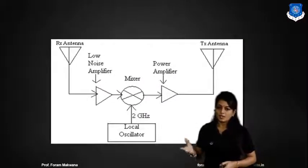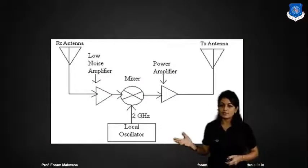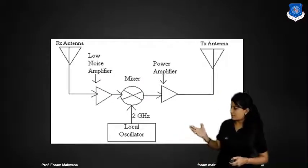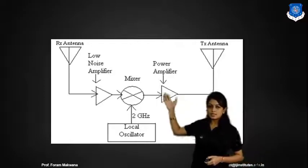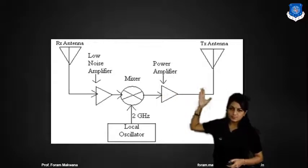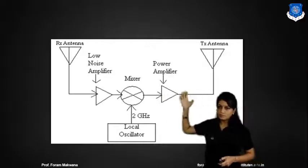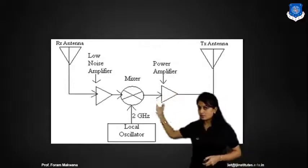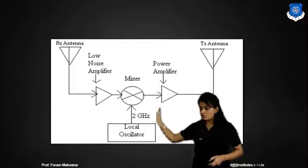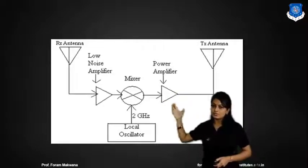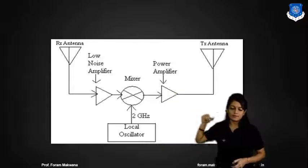This is how the transponder will work. It has a listening antenna, a transmitting antenna, and in between the first block — a low noise amplifier, mixer, and power amplifier.